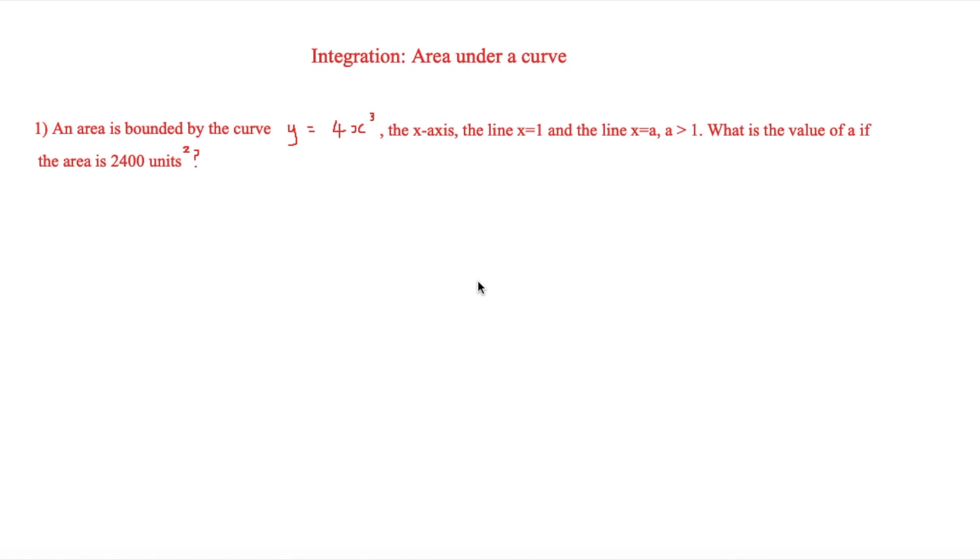So the next problem involves slightly more problem solving. And this one says that an area is bounded by the curve y equals 4x cubed, and the x axis, which is the line x equals 1, and the line x equals a, where a is more than 1. So what is the value of a if the area is 2,400 units squared?